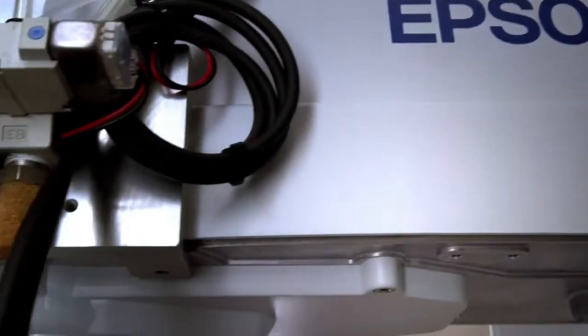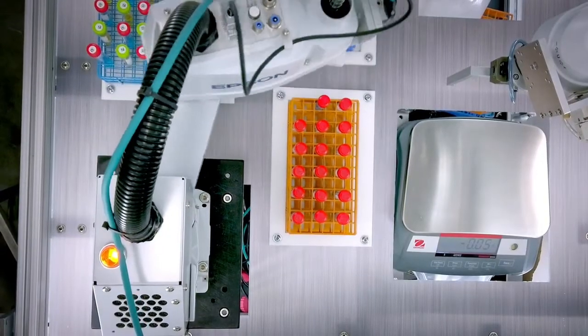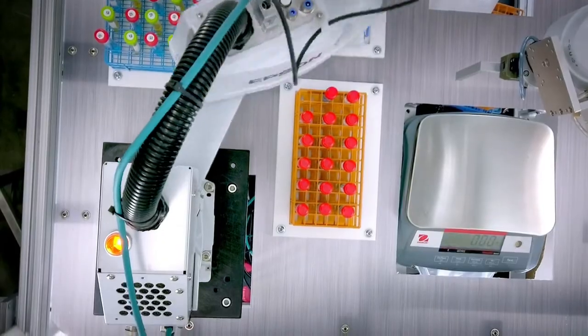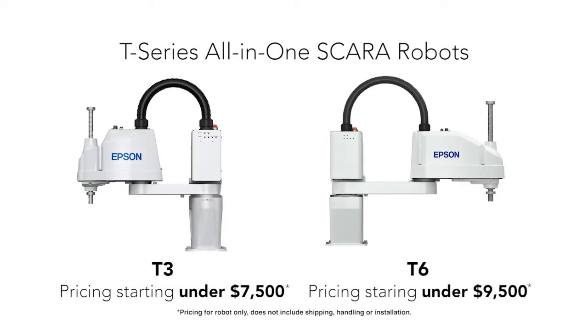The best thing about the all-in-one robot line is that it is very economical. You may be thinking, what does it cost to get one of these robots in my lab and up and running? Well, the T3 robot is available for under $7,500 and the T6 is available for less than $9,500.